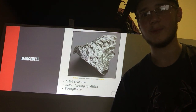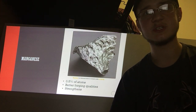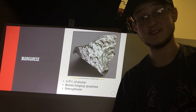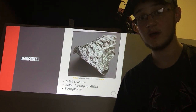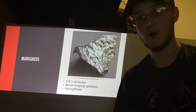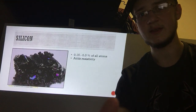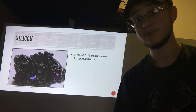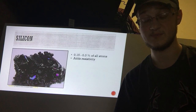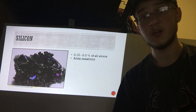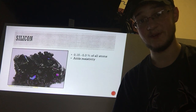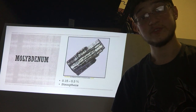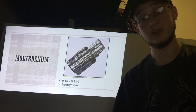The third largest is manganese, which holds about 0.5 percent of all the atoms in the system. Manganese is typically added to high quality steel because it increases the forging quality of the steel and adds a small amount of strength. Next, at about 0.15 to 0.30 percent of all atoms, is silicon, which adds a small amount of strength and more noticeably a larger resistivity to electricity. That is followed by molybdenum, which holds the same amount of atoms and is used to add strength to the material.